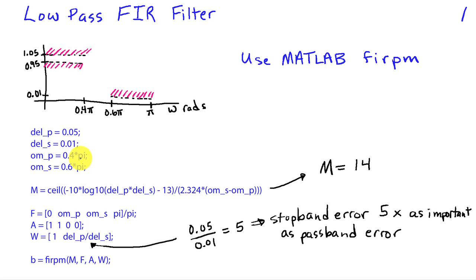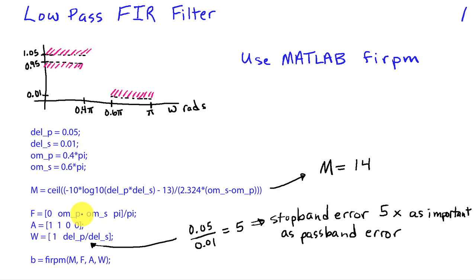Then we're going to specify the pass band edge and the stop band edge frequencies, and we also need to declare the order of the filter. We're using an approximate expression that was developed to give a good guideline for low-pass filters — it's a function of the ripple in the stop and pass bands, as well as the width of the transition band. In this particular case, it results in suggesting an order of 14. Then we specify the frequency bands, which for FIRPM involves specifying both edges of the pass band — from 0 to 0.4 pi — and both edges of the stop band, which go from 0.6 pi to pi. MATLAB uses normalized frequencies, so we need to divide these by pi.